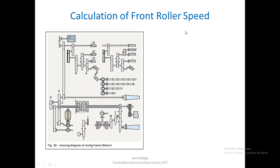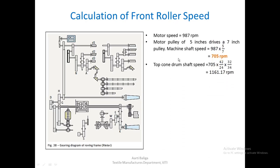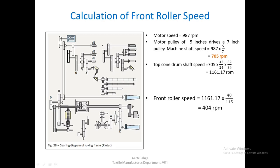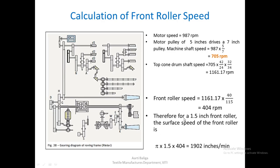For calculation of front roller speed: from the machine shaft (speed 1161.17 RPM) driving via wheels 40 and 115, the front roller speed (D1) = 404 RPM. Assuming the front roller diameter is 1.5 inches, the surface speed of the front roller is 1902 inches per minute.